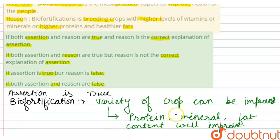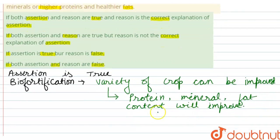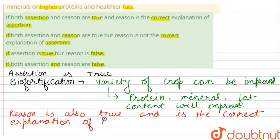So it is the breeding of the crop with higher level of vitamin, mineral, proteins, which is the reason. So reason is also true and is the correct explanation of assertion.